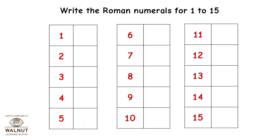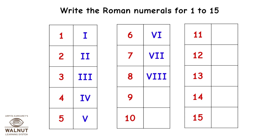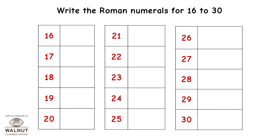Write the Roman numerals for 1 to 15: 1 is I, 2 is II, 3 is III, 4 is IV, 5 is V, 6 is VI, 7 is VII, 8 is VIII, 9 is IX, 10 is X, 11 is XI, 12 is XII, 13 is XIII, 14 is XIV, 15 is XV.